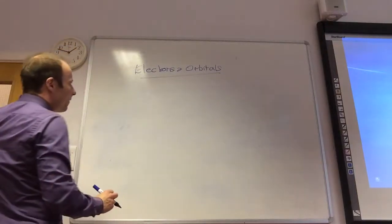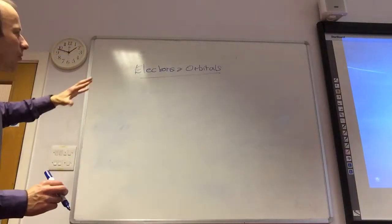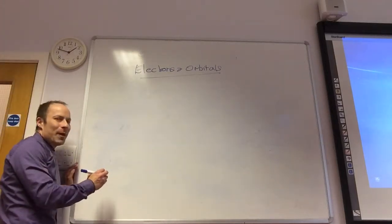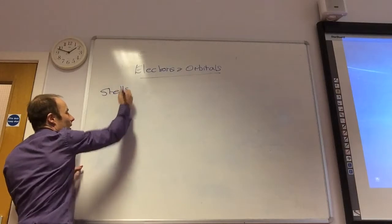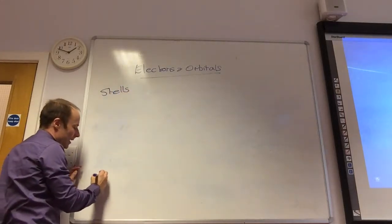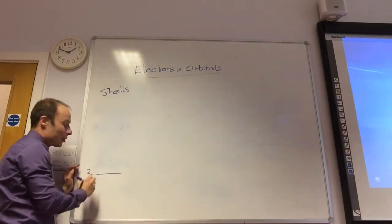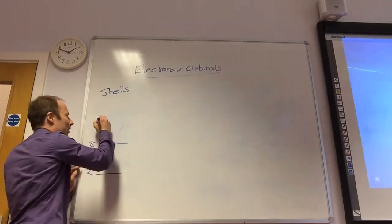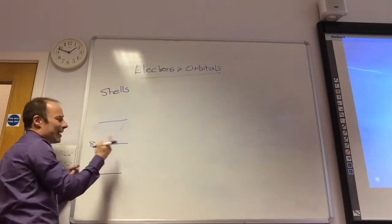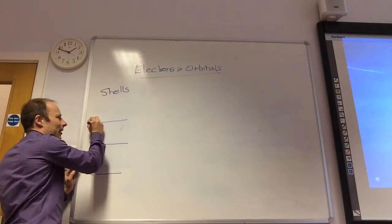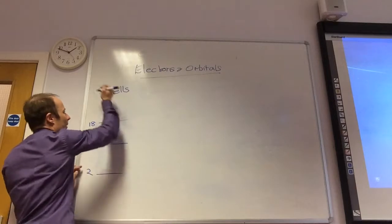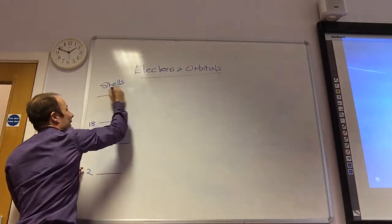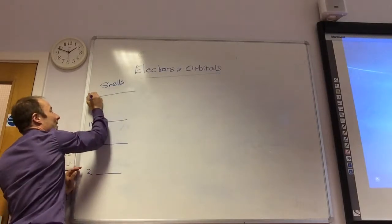Right, so we're going to try and now figure out what is actually happening with the electrons and orbitals. If we go back to GCSE, remember in GCSE we talk about shells. We said that in the first shell we can have two electrons, in the next shell we have eight electrons. Now, we know that in the next shell we have 18 electrons.